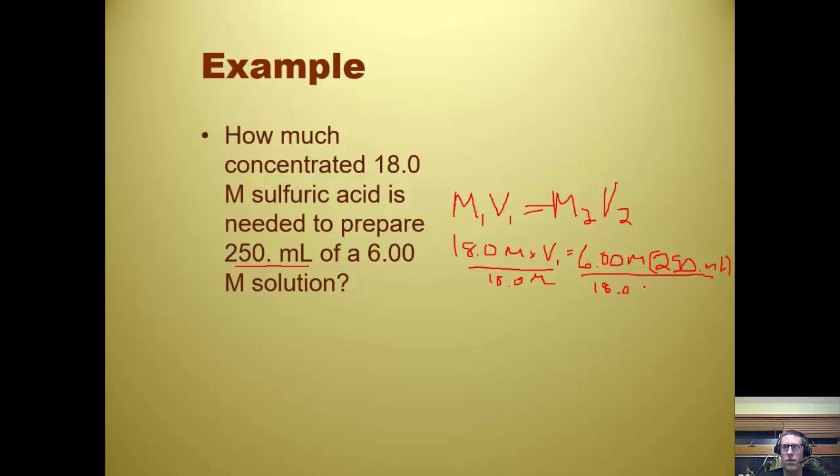18.0 molar. And we have molar cancels, 18 cancels. Over here we have molar cancels, molarity cancels. And so we have 6 divided by 18, or 6 times 250 divided by 18, which is 250 divided by 3, which means V1 equals 6 times 250 divided by 18, gives us 83.3 milliliters.